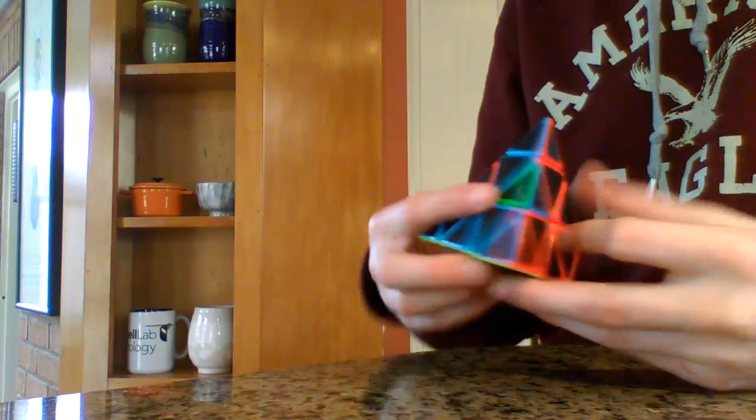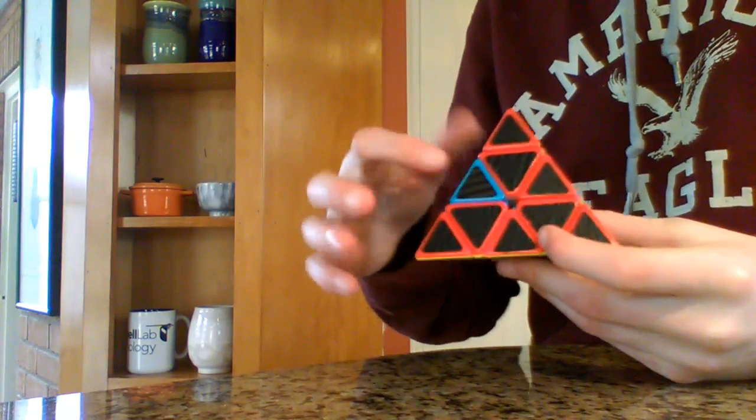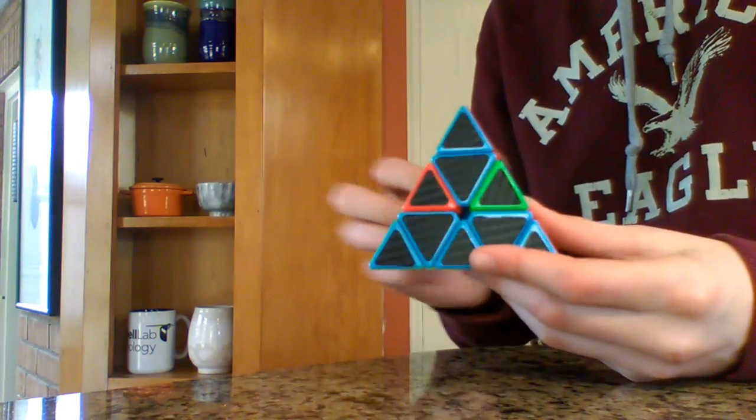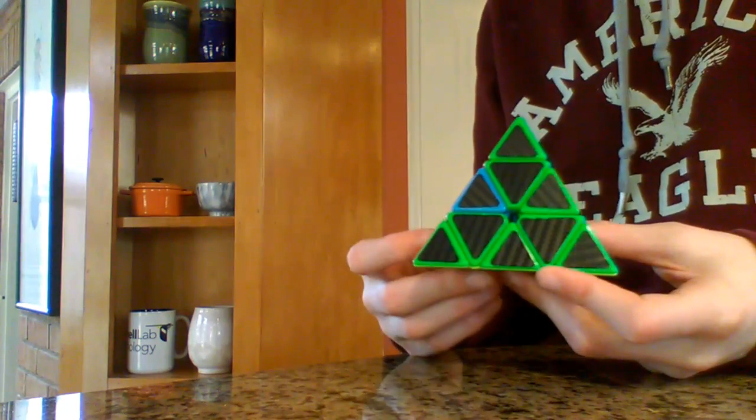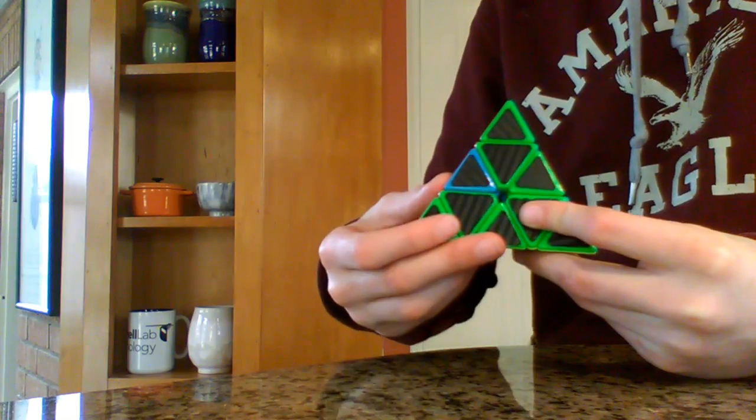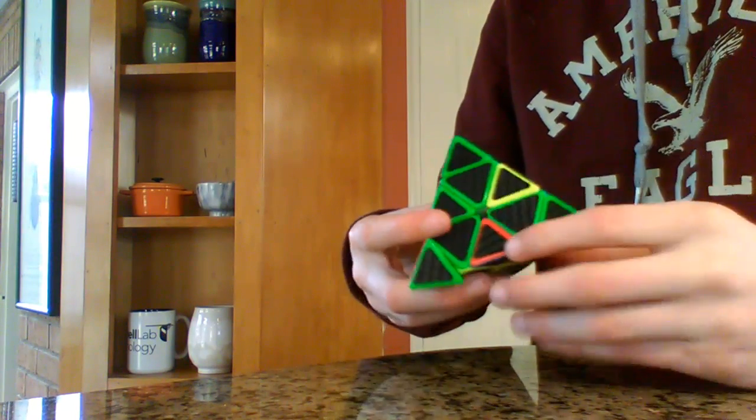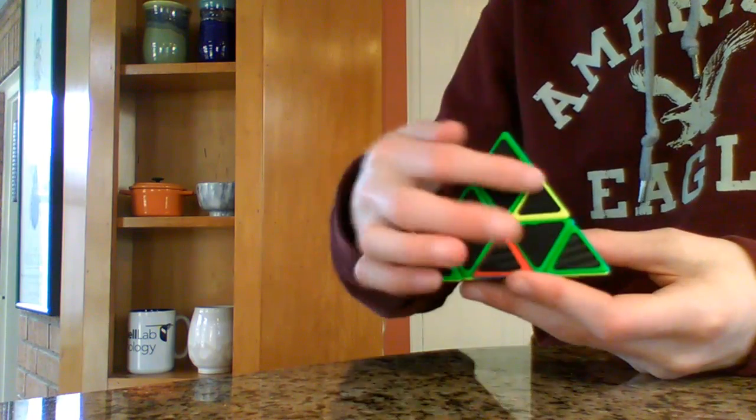Start on any side that has just one wrong edge. Don't do it on a side that has two wrong. The algorithm is: left down, right down, left up, right up. As you can see, we brought up a piece.